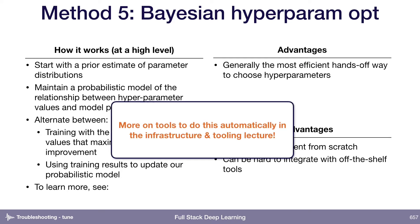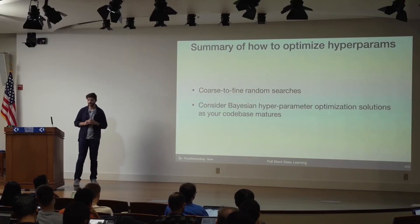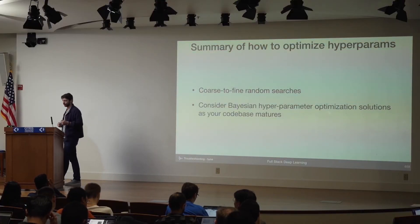My summary of what you should actually do: I would typically start with coarse-to-fine random searches — relatively easy to use and tends to work really well. Then I would consider moving to Bayesian hyperparameter optimization as your codebase matures, as more people work on your projects, and as you become relatively comfortable that things are working. That's the point where I'd consider integrating with one of these off-the-shelf hyperparameter optimization solutions.